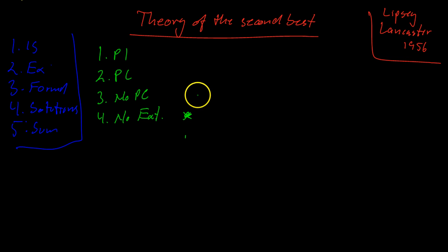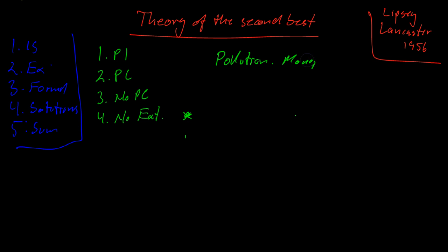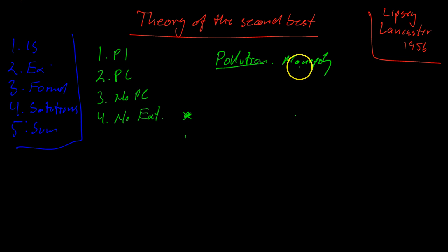The theory of the second best tells you no. Let's say you have a firm that pollutes and it's a monopoly. The pollution — let's call that condition four — is an externality you cannot change by assumption. Should we then try to deregulate the monopoly and create perfect competition? If you actually break up the monopoly, you can get more pollution. It's bad to have a monopoly because it charges high prices, but if you break it up, you have more pollution — so it's not necessarily good to do so. That's one example of the theory of the second best.